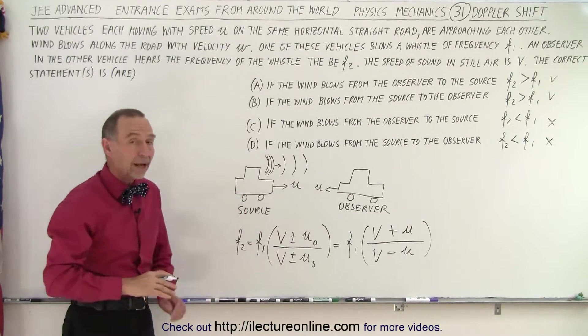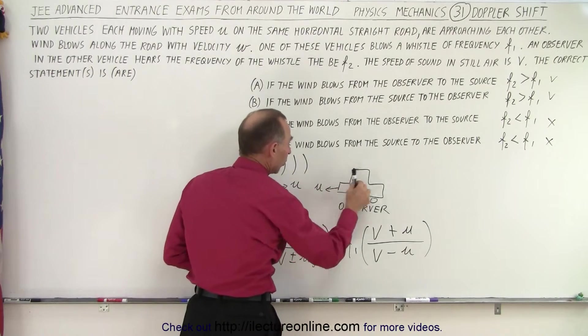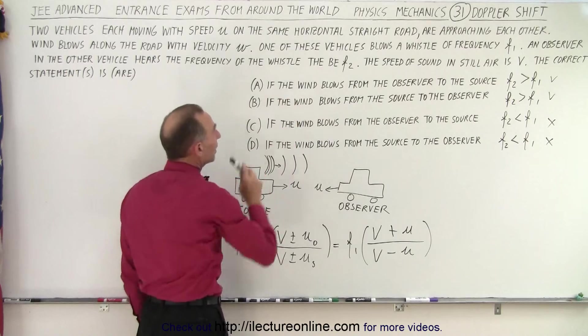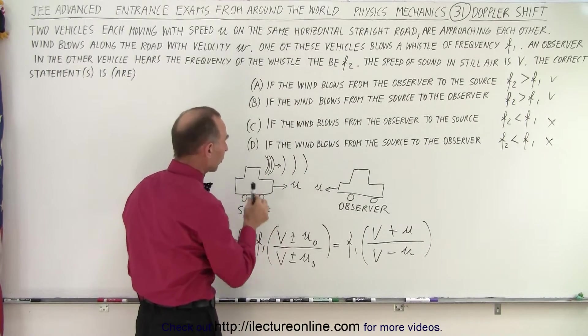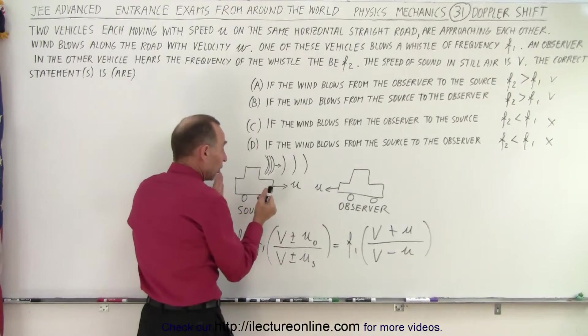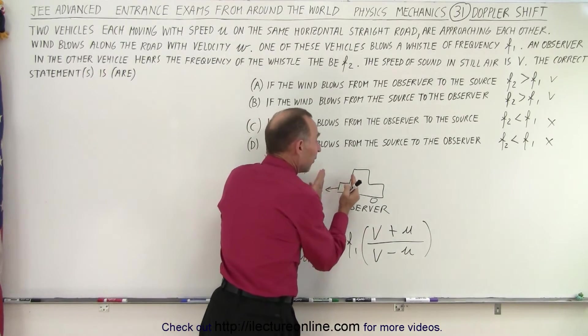Now the question is, will that now change because there's a wind blowing? Now the wind could be blowing towards the observer or the wind could be blowing towards the source. So in case one here it says if the wind blows from the observer to the source, well what would that do? Well if the wind blows, it simply would carry the waves to the observer faster.